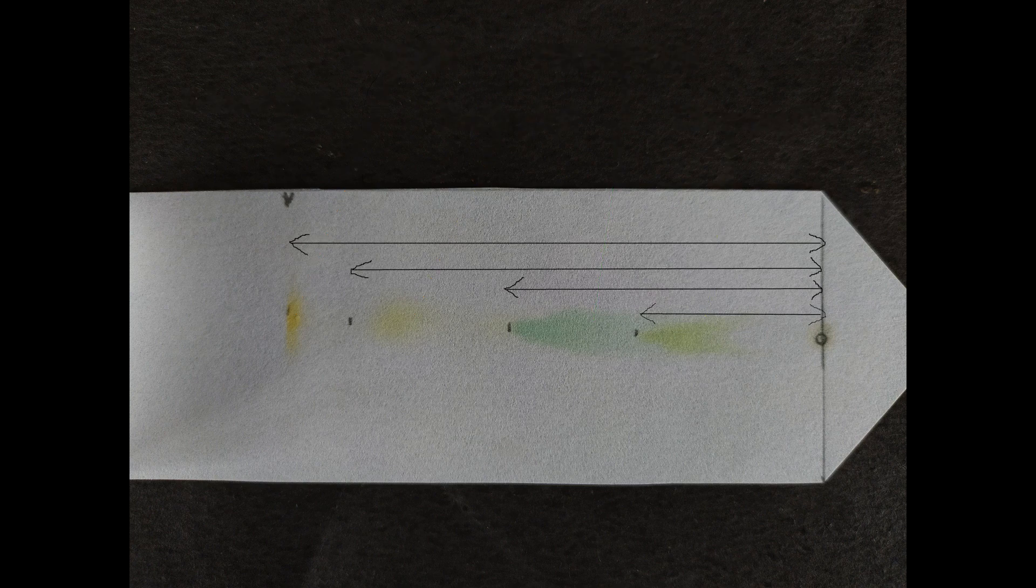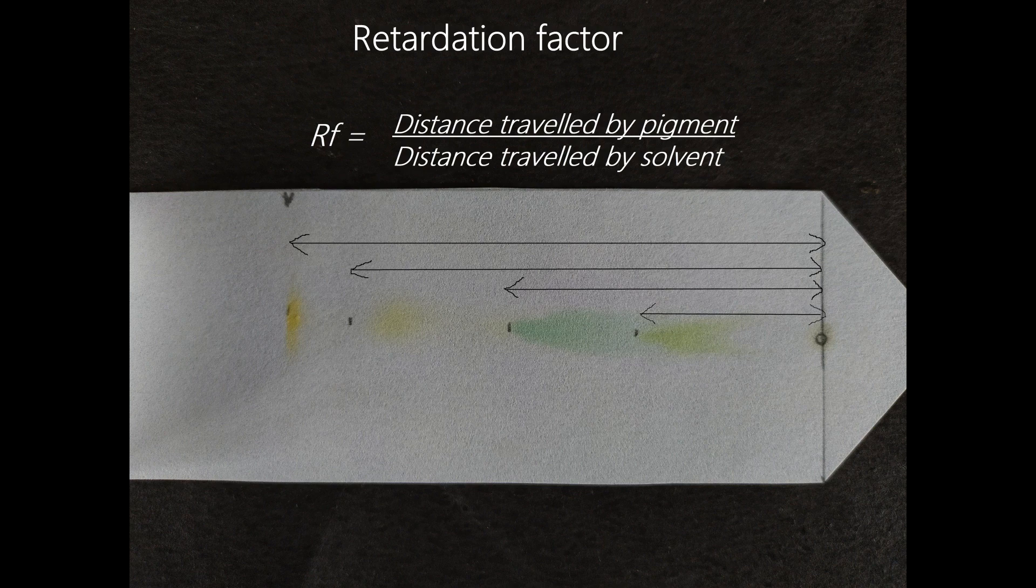Using a scale, measure the distance traveled by each pigment and calculate the retardation factor, or RF, for each pigment using the formula RF equals distance traveled by pigment divided by distance traveled by solvent.